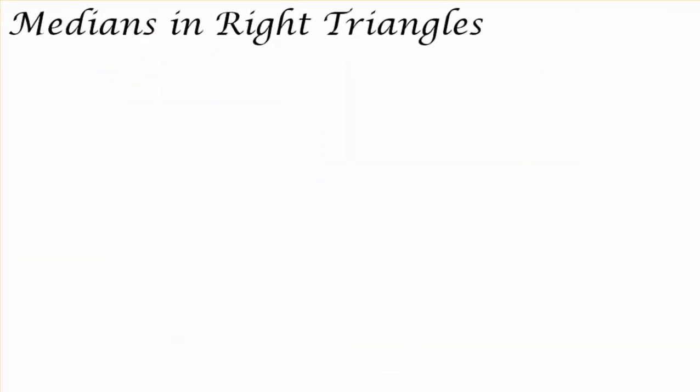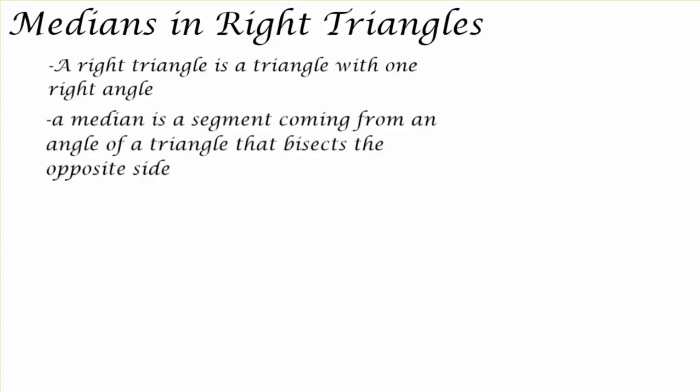Welcome to the lesson on medians and right triangles. In this lesson, we will discuss and illustrate the special relationship that a median has in a right triangle. Now, recall that a right triangle is a triangle with one right angle, and that a median is a segment coming from an angle of a triangle that bisects the opposite side.